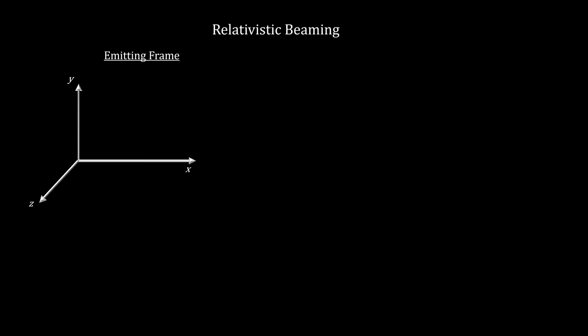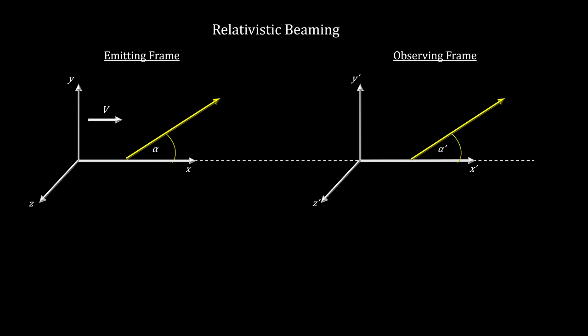Another relativistic effect at play here is called relativistic beaming. To illustrate, consider an inertial reference frame moving to the right at relativistic speeds with respect to an aligned reference frame on the right. A particle emits a photon at an angle alpha from the line of motion. The angle measured in the frame on the right can be computed using the Lorentz transformation.